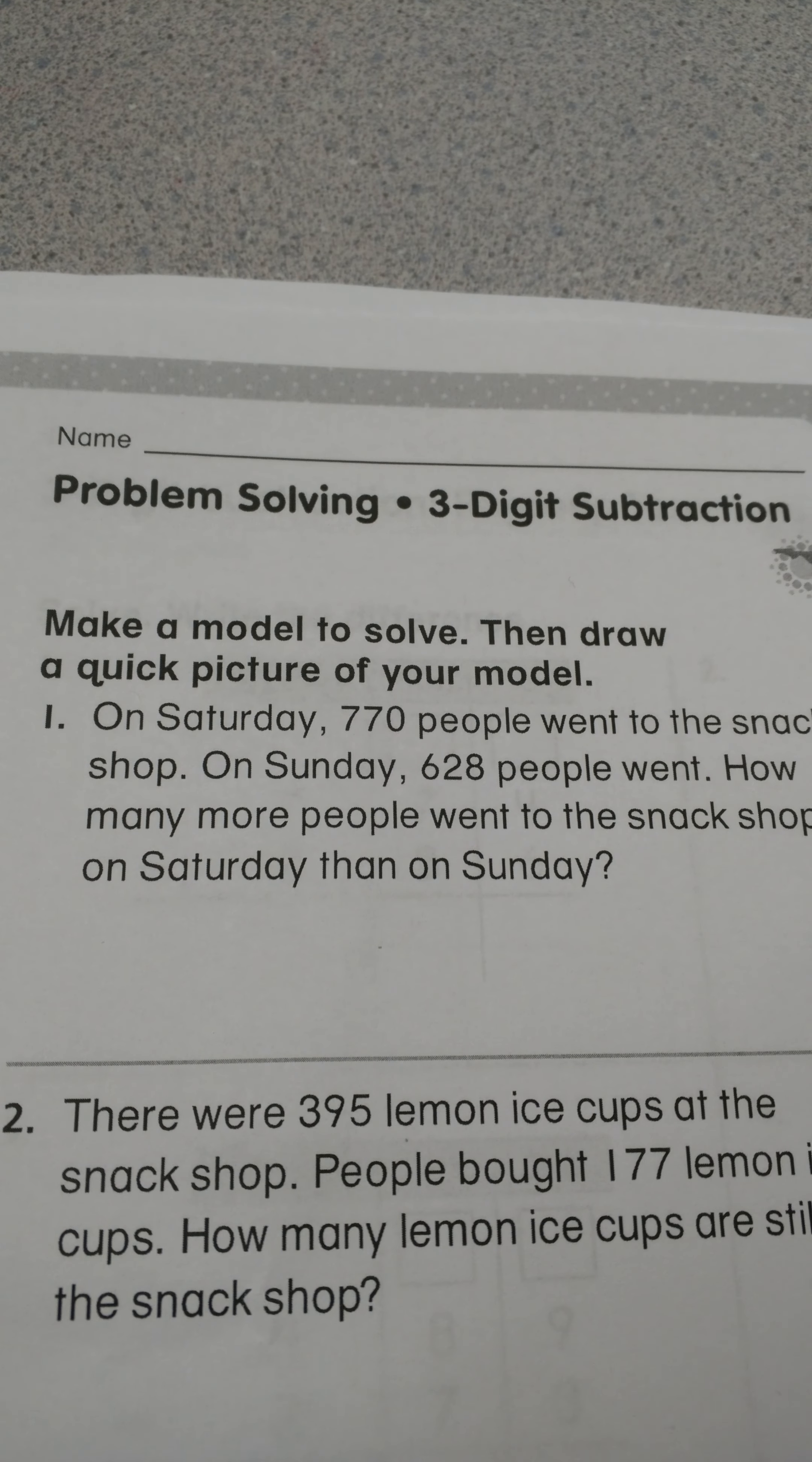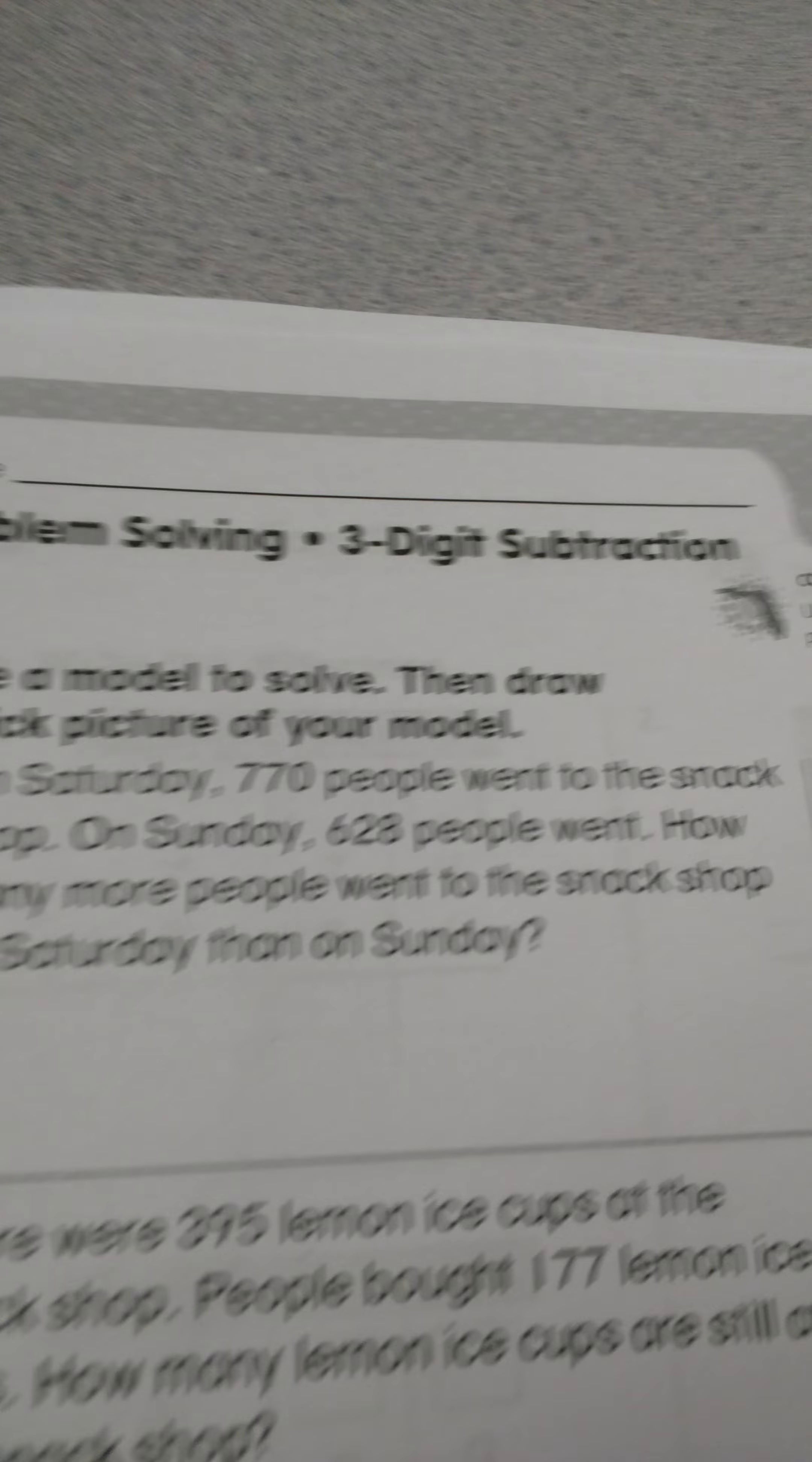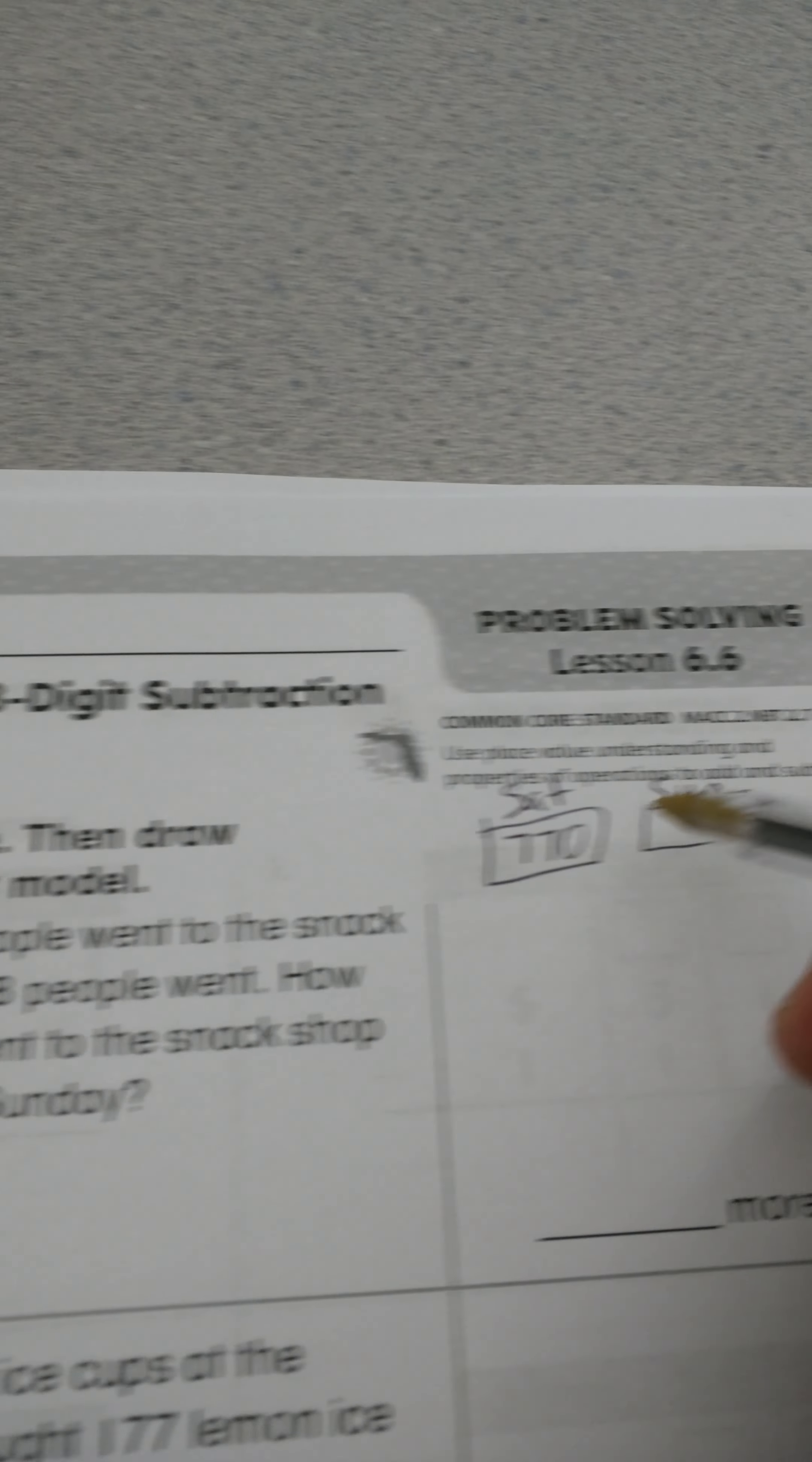Let's read the question first. It says, on Saturday, 770 people went to the snack shop. On Sunday, 628 people went. How many more people went to the snack shop on Saturday than on Sunday? I need to figure out a couple things first before I get started. I'm just going to draw a little picture of the shop, and I'm going to write 'Sat' for Saturday and 770 people went. Then I'm going to draw for Sunday that 628 people went.